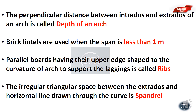The irregular triangular space between the extrados and a horizontal line drawn through the crown is called spandrel. This is an important term. The triangular space is called spandrel.